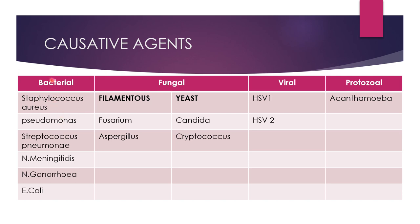The most common organisms causing corneal ulcers are bacteria — most commonly Staph aureus, Pseudomonas, Pneumococcus, Meningococcus, Gonococcus, and E. coli. Common fungi causing keratitis are Fusarium, Aspergillus, and Candida. In viral etiology, herpes simplex type 1 and type 2 are responsible. In protozoa, Acanthamoeba — which is fortunately rare — can cause severe and extremely painful keratitis.